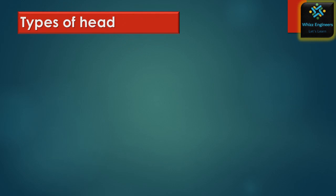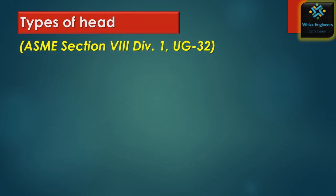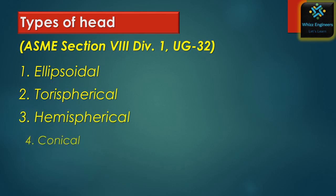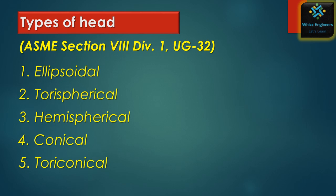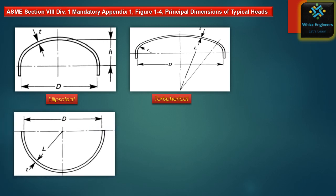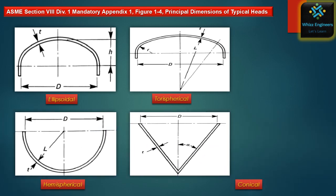As per ASME Section 8 Division 1 UG-32, there are five types of head: the first one is ellipsoidal, second tori-spherical, third hemispherical, fourth conical, and fifth tori-conical. Principle dimensions and shapes of typical heads are given in ASME Section 8 Division 1 Mandatory Appendix 1.